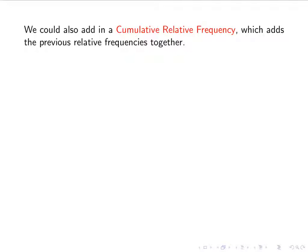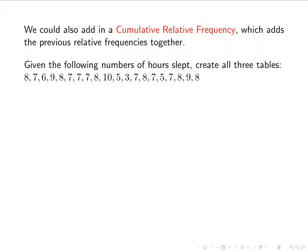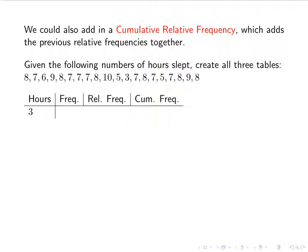We could also add what's called a cumulative relative frequency. Cumulative means combined, or total, or added — so we're just going to add the previous relative frequencies together. Given the following numbers that represent hours slept, we're going to create all three tables. One of the first things you want to do is count how many numbers there are — there are 20, usually denoted by n. The sample size is 20. So we're going to have columns for hours, frequency, relative frequency, and cumulative frequency.